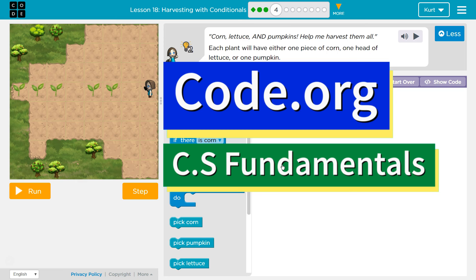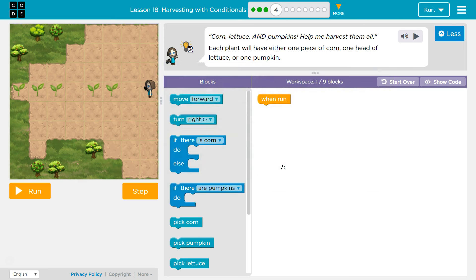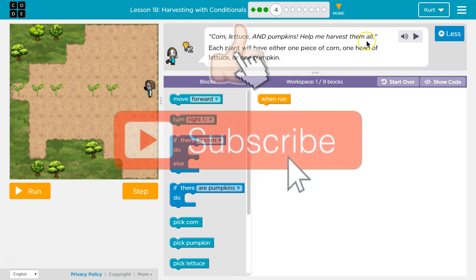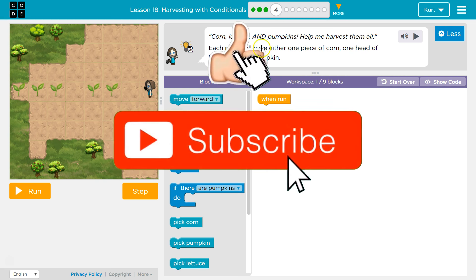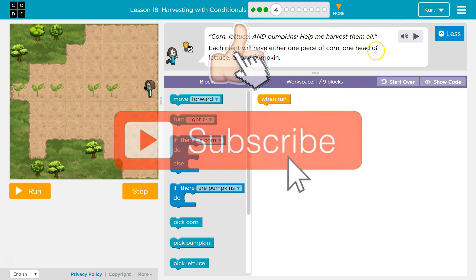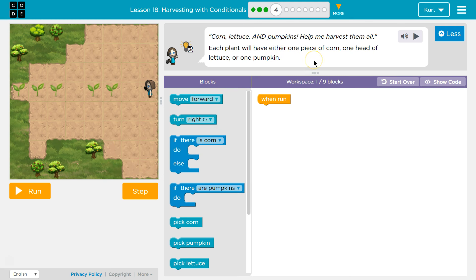This is code.org. I'm currently working on CS fundamentals. Corn, lettuce, and pumpkins help me harvest them all. Each plant will have either one piece of corn, one head of lettuce, or one pumpkin.